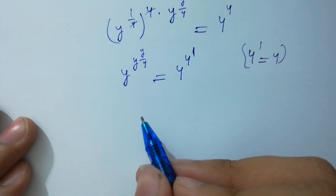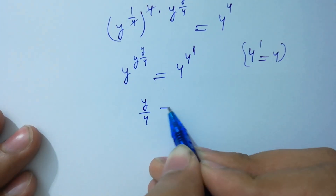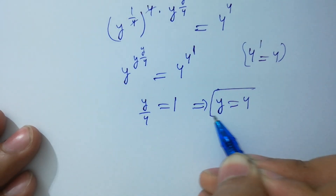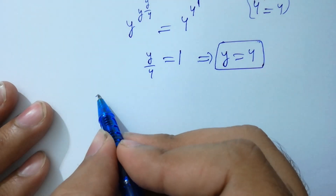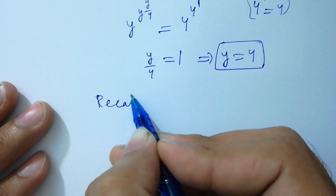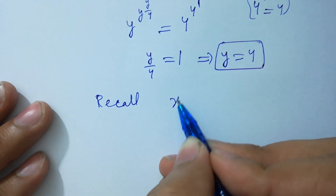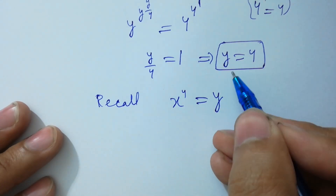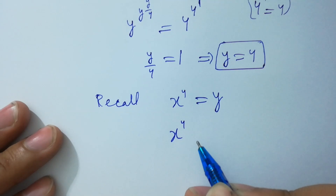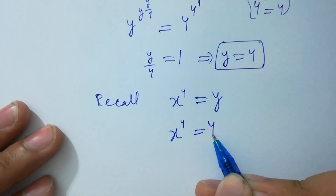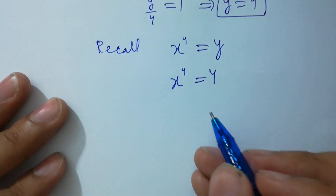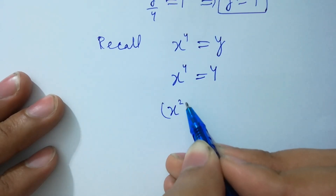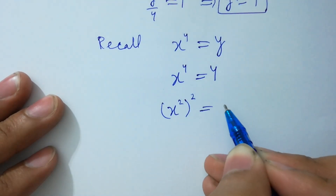By corresponding, y over 4 equals 1, which gives y equals 4. Recall x to the power 4 equals y. Substituting the value of y: x to the power 4 equals 4. This is the same as x squared to the whole power squared, giving x squared equals 4.